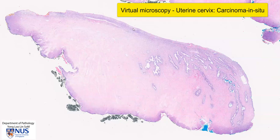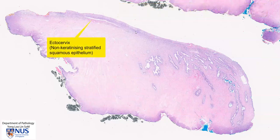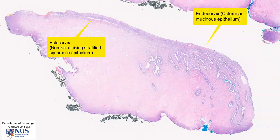Here is the mucosa of the cervix. On the left side we have the ectocervix, which is composed of non-keratinizing stratified squamous epithelium, and moving towards this edge, this is the endocervix, which is comprised of columnar mucinous epithelium.